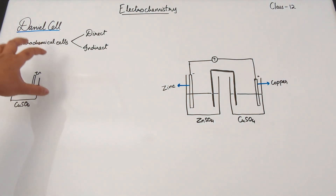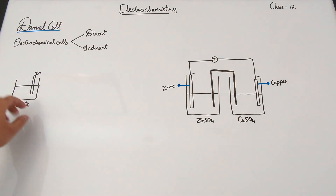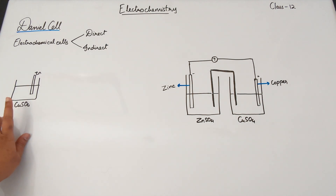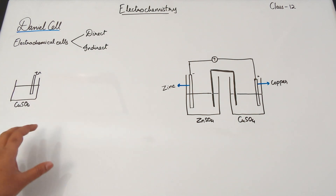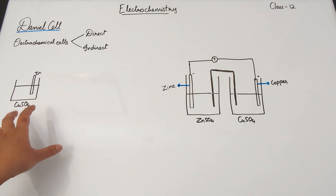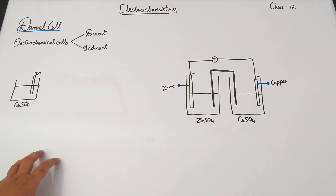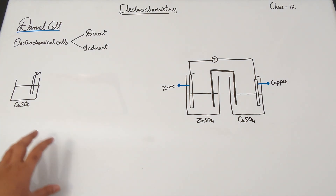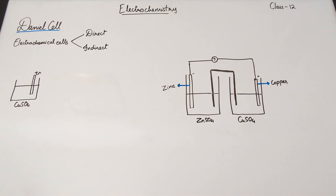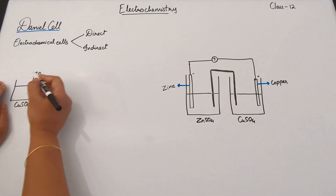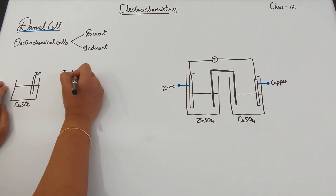Let's start with direct cells. Here you have a beaker which has zinc as your electrode and copper sulfate as the electrolyte. Right after we put the zinc in, what are the things we might observe? What starts to happen is basically the zinc will start getting dissolved into the solution and it will start losing weight slowly and steadily.